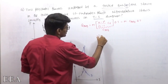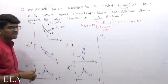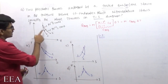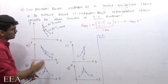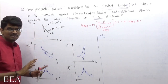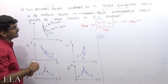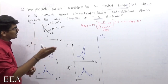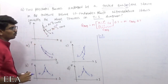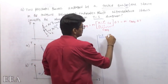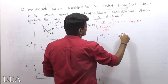Let's take the 1→2 process first. As you can see, volume is increasing and pressure is decreasing — it's an expansion process. For this process, the value of n is 1.2.